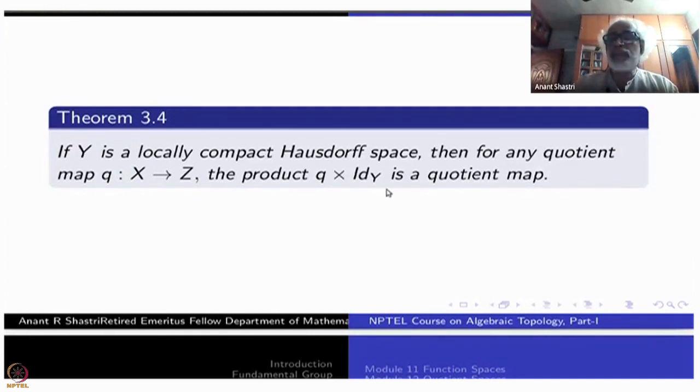So the new creature which comes here, Q could be any quotient map. This one should be locally compact. Then, no matter what Q is, Q is some quotient map, Q × identity is also quotient map.